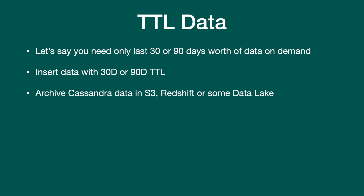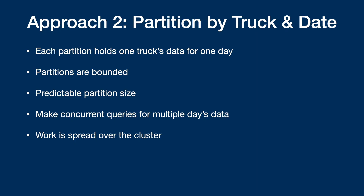TTL is a very niche use case. If you want to keep historical data in Cassandra, Approach 2 should be good for you. In most time series data use cases, the approach of partitioning by truck ID and date should be good enough. That's all I had today — hopefully that was helpful. If you have any questions, leave them in the comments and I'll get back to you. I'll catch y'all in the next one, bye!